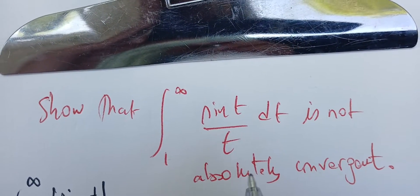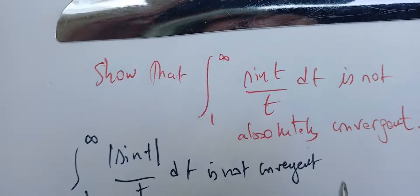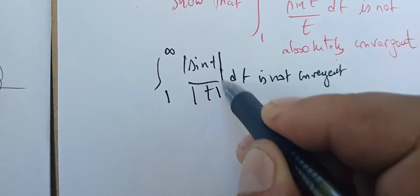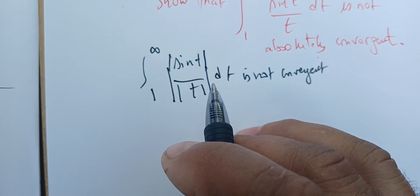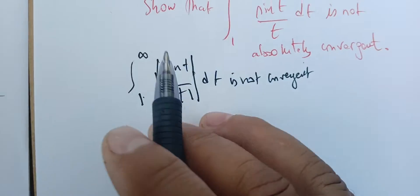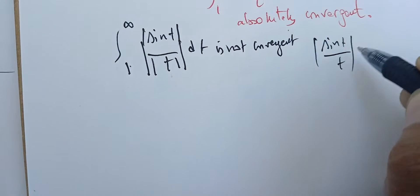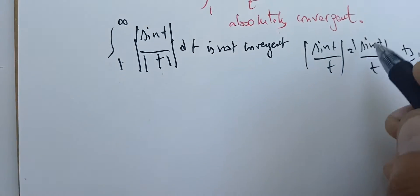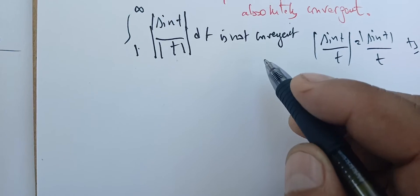In this video we're going to prove that the integral between 1 and infinity of sin(t)/t dt is not absolutely convergent. That means we need to prove that the integral of |sin(t)|/t diverges. Since t is bigger than 1, the absolute value of t is just t, so |sin(t)|/t equals |sin(t)|/t.